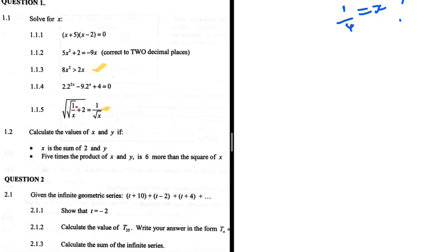Let's take a look at the conditions. The first bullet point: x is the sum of 2 and y. The next bullet point: five times the product of x and y is 6 more than the square of x.